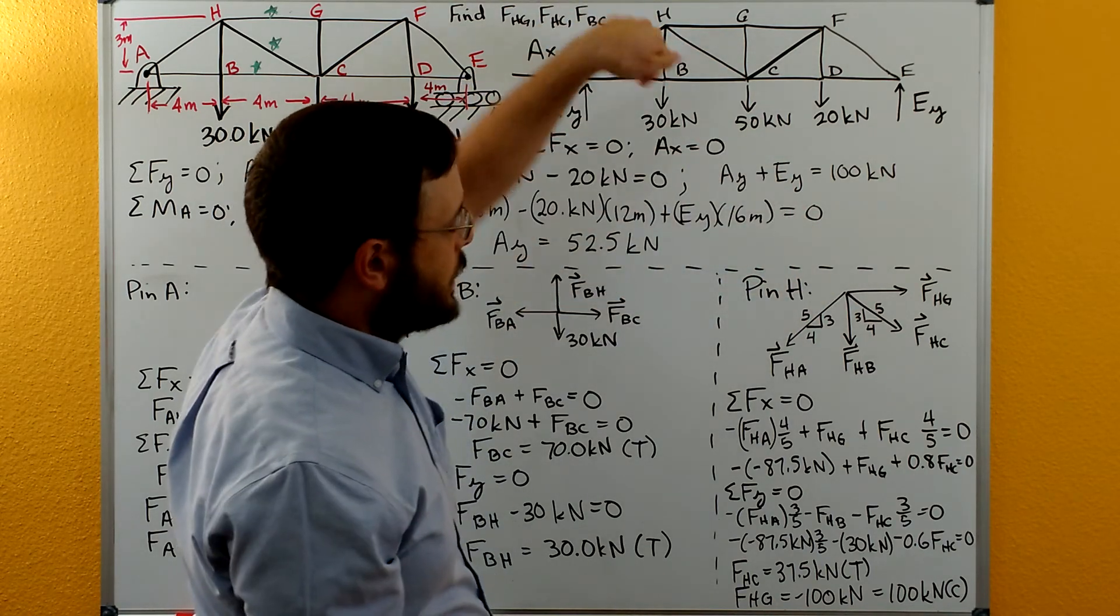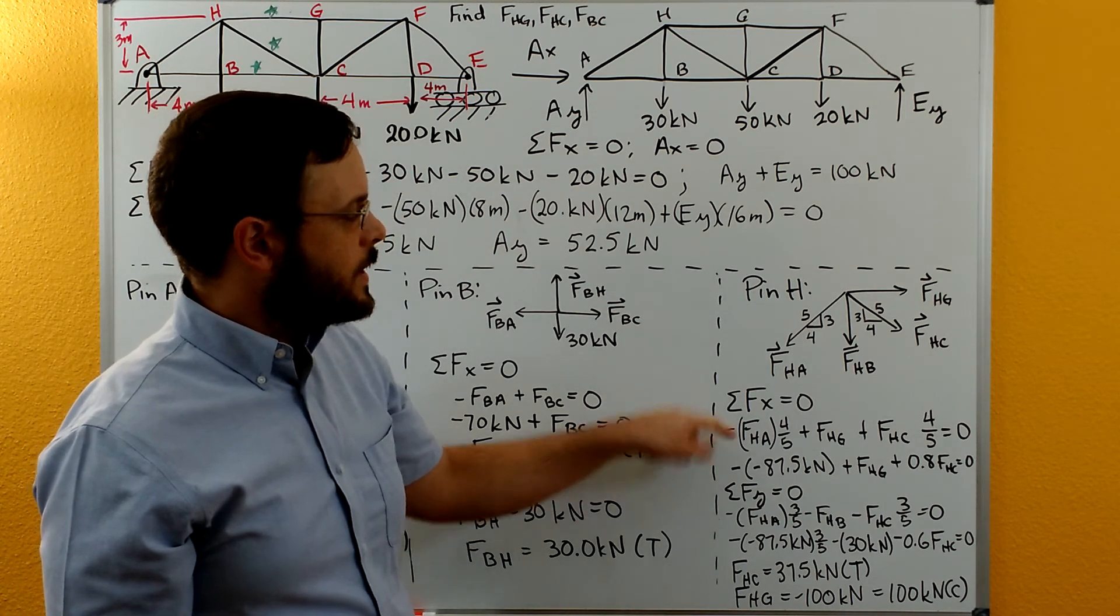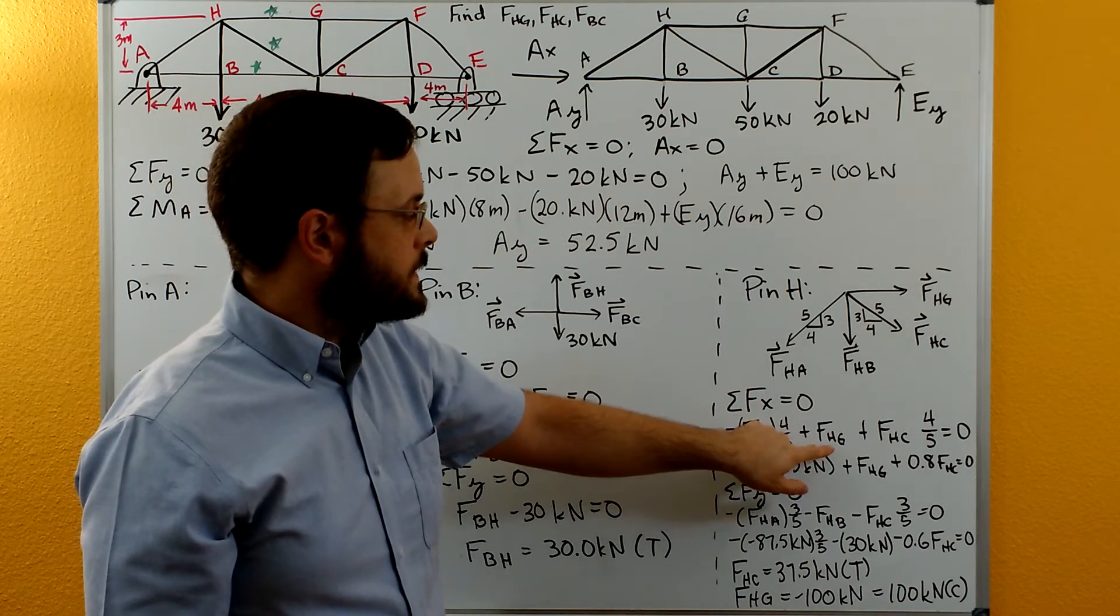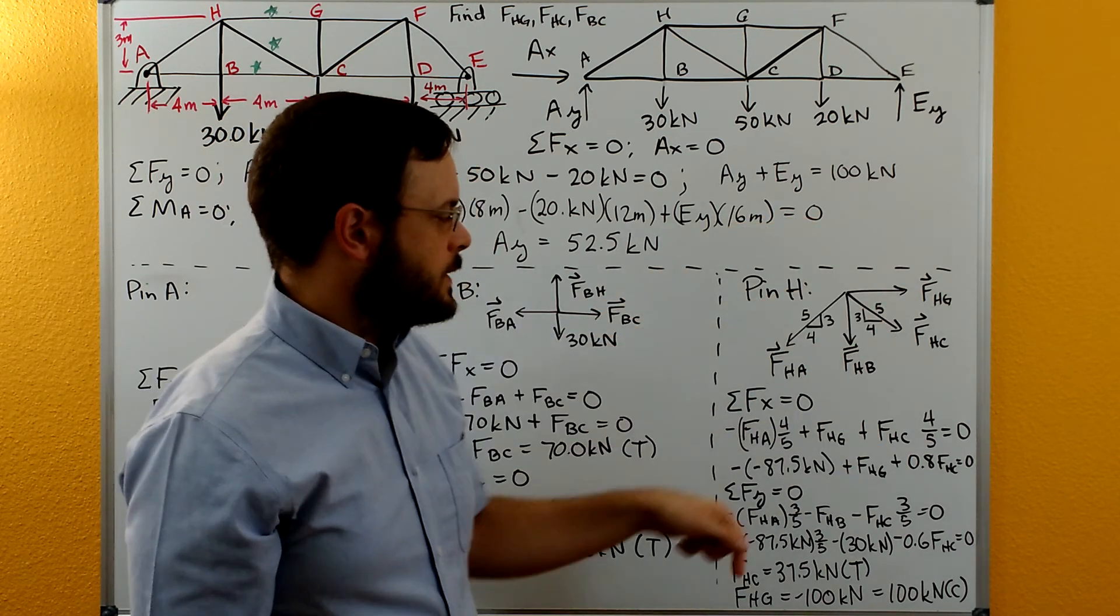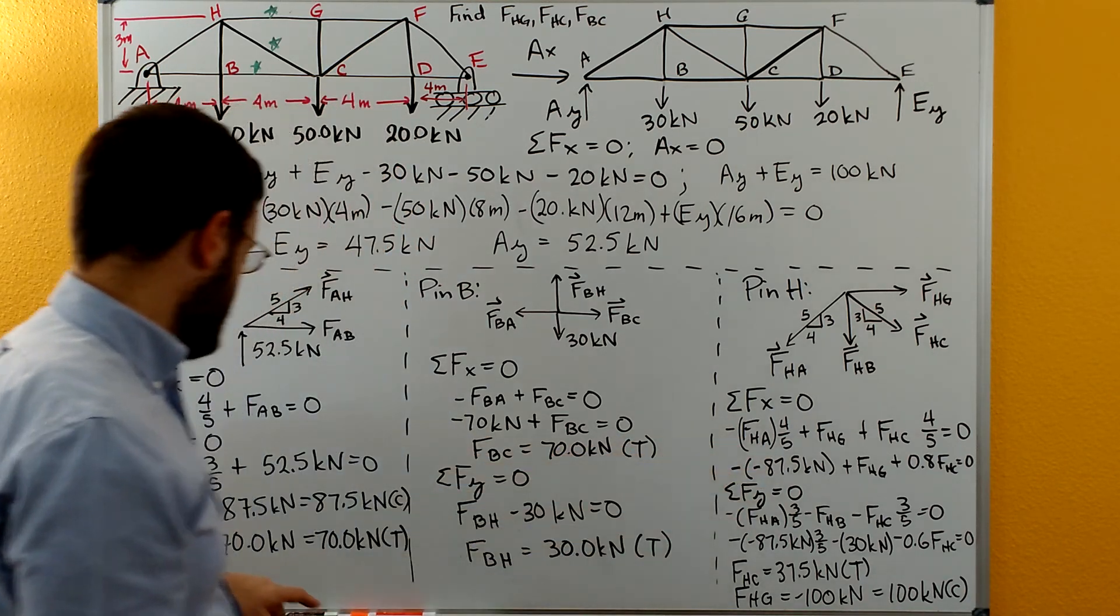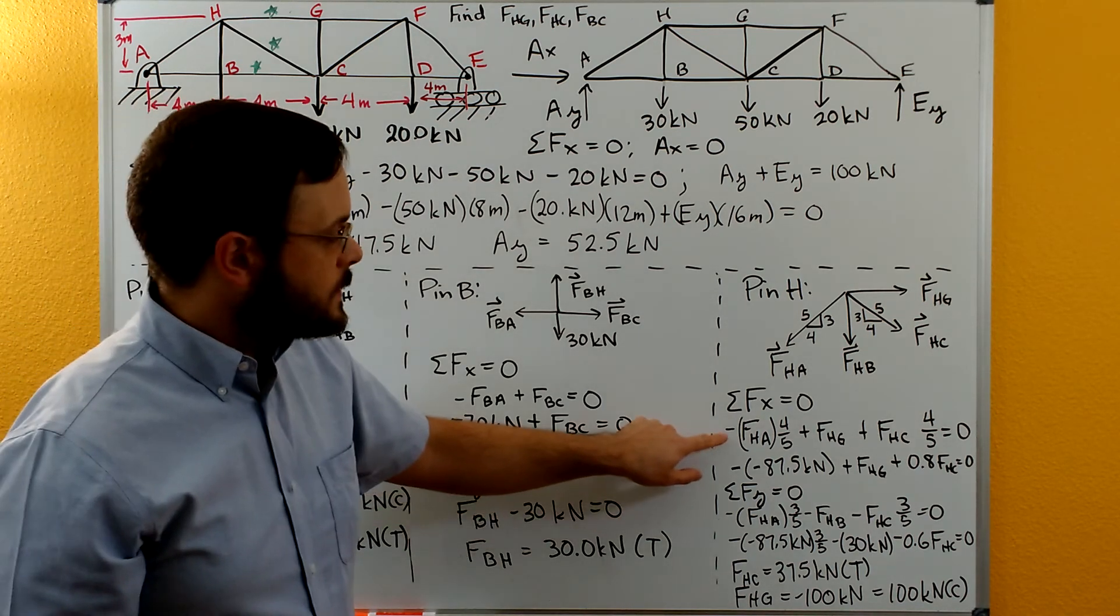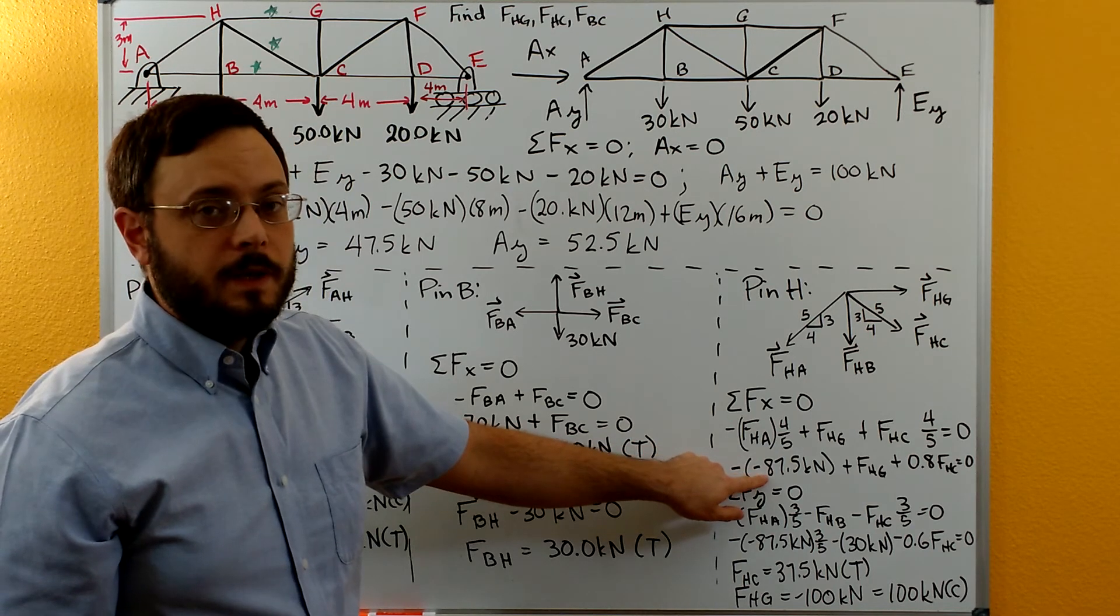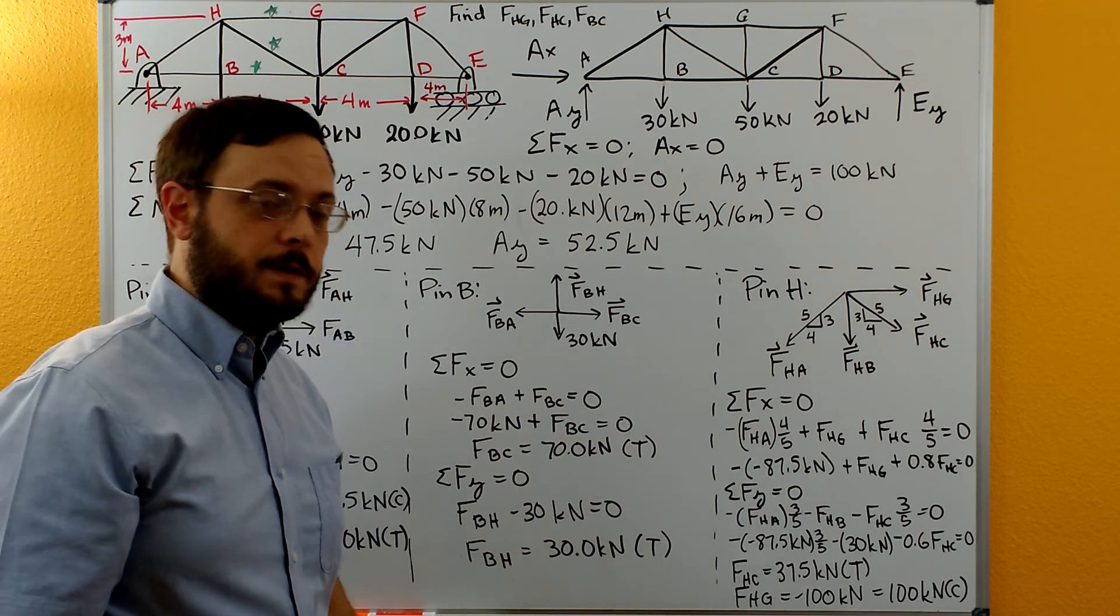Sum of forces in the Y direction: we have negative FHA set by the sign just of the arrow drawn as if it's in tension, plus FHG plus four-fifths of FHC equals zero. We can plug in the negative 87.5 that we solved for over here. Notice we keep the negative sign out in front and then we also put the negative sign in for the value. So this minus minus will become a plus in that equation.